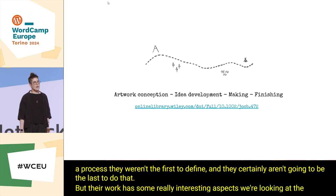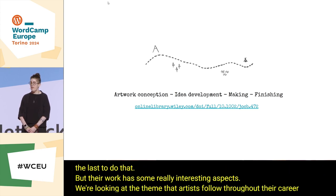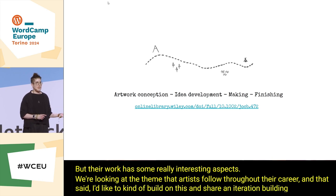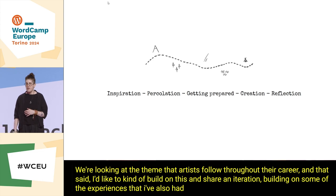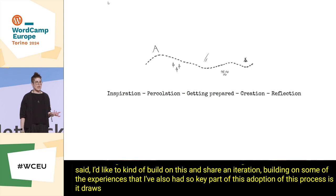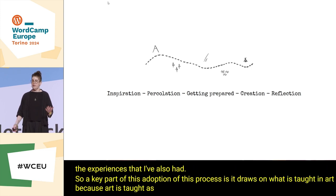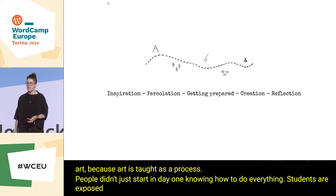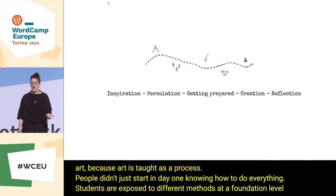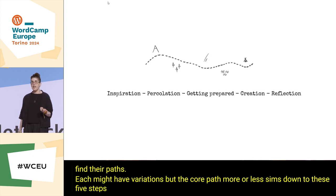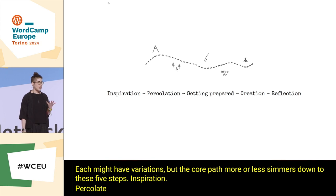I'd like to build on this and share an iteration drawing on some of the experiences I've also had. A key part of this adaptation is that it draws on what is taught in art, because art is taught as a process. Students are exposed to different methods at a foundation level, and then they find their paths. The core path more or less simmers down to these five steps: inspiration, percolation, getting prepared, creation, and reflection.